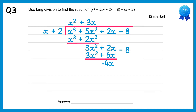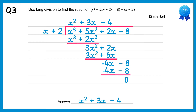Bring down the final term, the negative 8. Negative 4x divided by x is negative 4. Multiply negative 4 back through: negative 4 times x is negative 4x, negative 4 times a positive 2 is a negative 8. If you subtract these you get 0. So the answer is x squared plus 3x take 4.